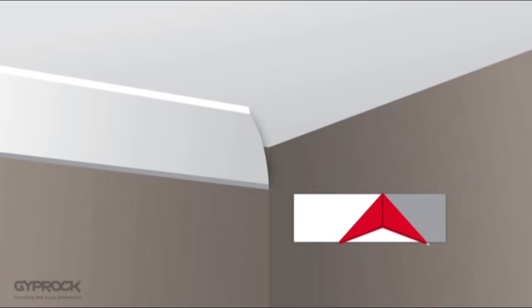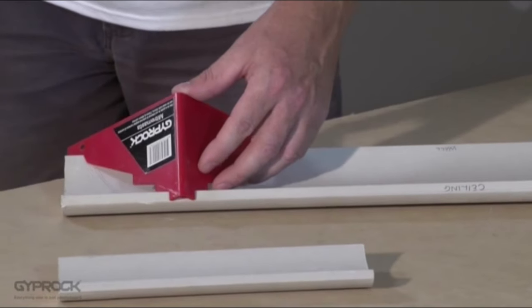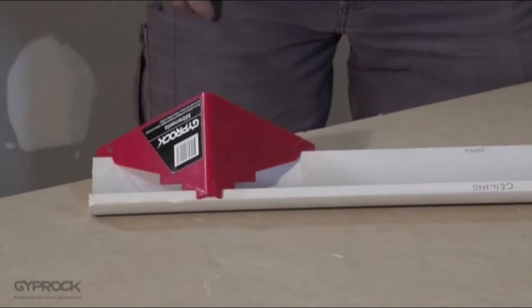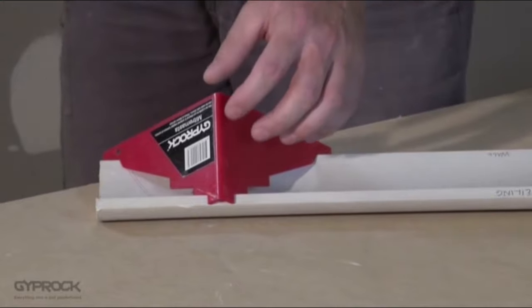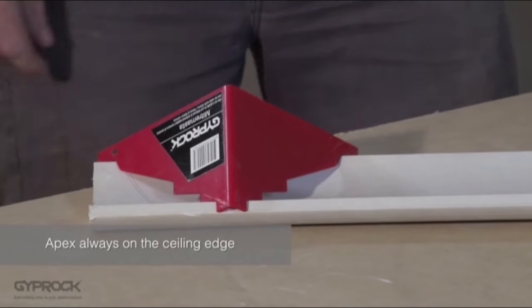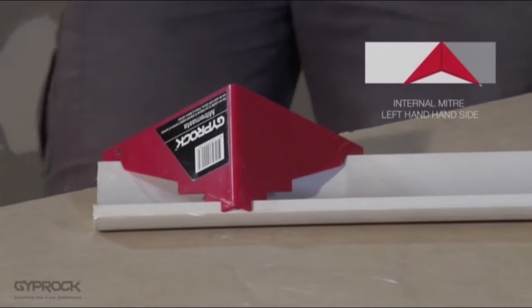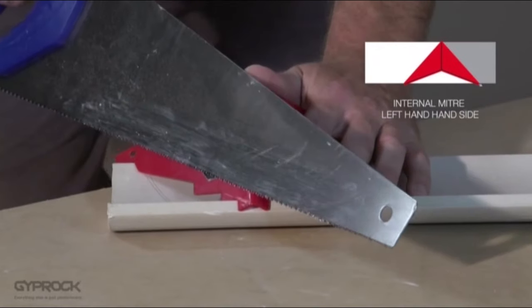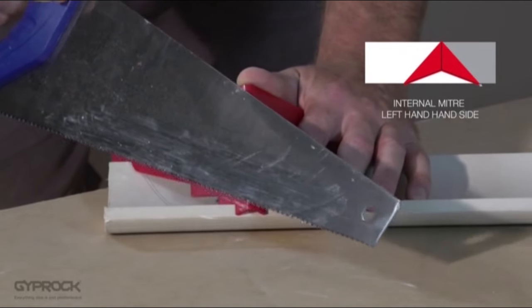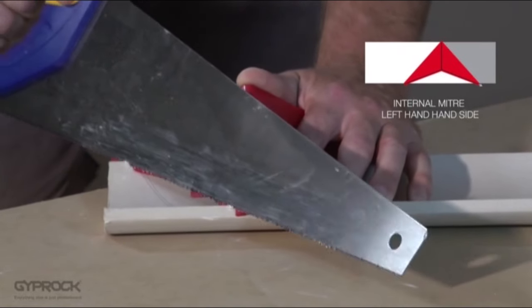We'll start with the left side of an internal angle mitre. Place the mitre master so that the indentations rest on the edge of the cornice making sure that the apex is on the ceiling edge. For the left side of a mitre we cut away the waste on the right side of the apex. Remember that the ceiling edge is shorter.